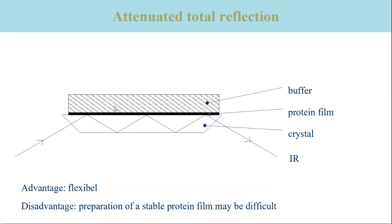The angle of incidence of the infrared radiation is such that the infrared light is totally reflected in the crystal, like in a light guide. Upon reflection, light penetrates the sample film and may be absorbed there. Therefore, the light that reaches the detector carries the information about the infrared spectrum of the sample film.